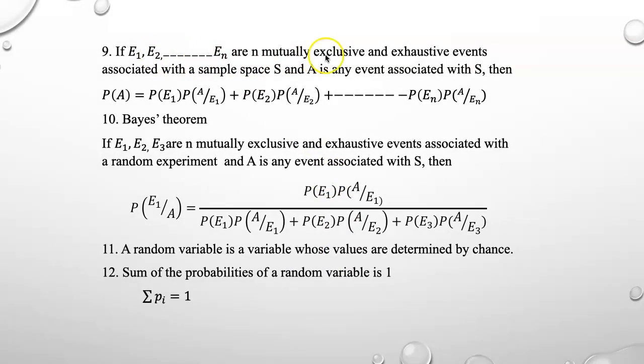If E1, E2 up to En are n mutually exclusive and exhaustive events associated with a sample space S and A is any event associated with S, then probability of A is probability of E1 into probability of A given E1 plus probability of E2 into probability of A given E2 and you go on up to probability of En into probability of A given En. This is the total probability theorem.